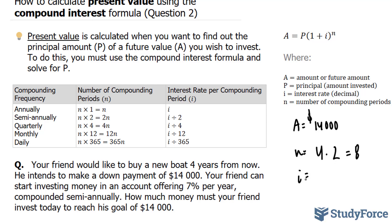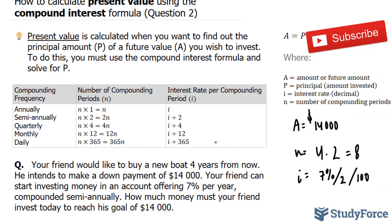The interest rate is 7% per year and it's also being compounded semi-annually. We take our 7% divided by 2, divided by 100. If you're confused about why we multiply and divide, just follow this chart.